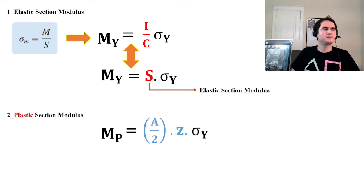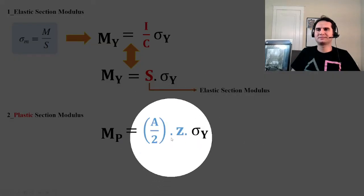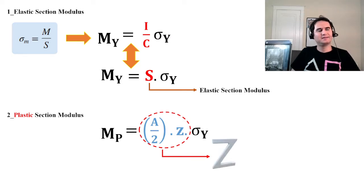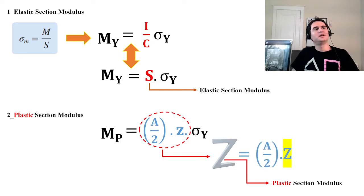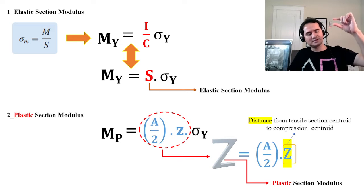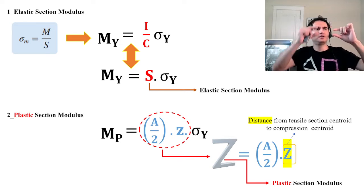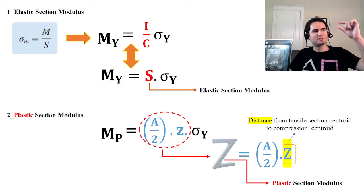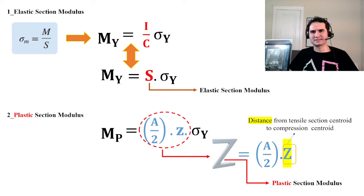For the plastic section modulus, we define plastic moment as (A/2) times lowercase z times sigma_Y. We call A/2 times lowercase z as capital Z, the plastic section modulus. In the plastic moment scenario, the section divides into two equal areas — one in tension and one in compression — and the distance between their centroids is called lowercase z. So capital Z equals A/2 times lowercase z.